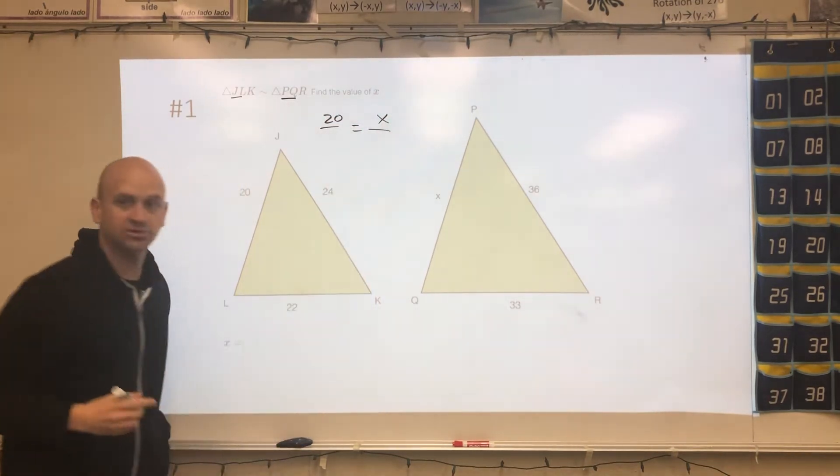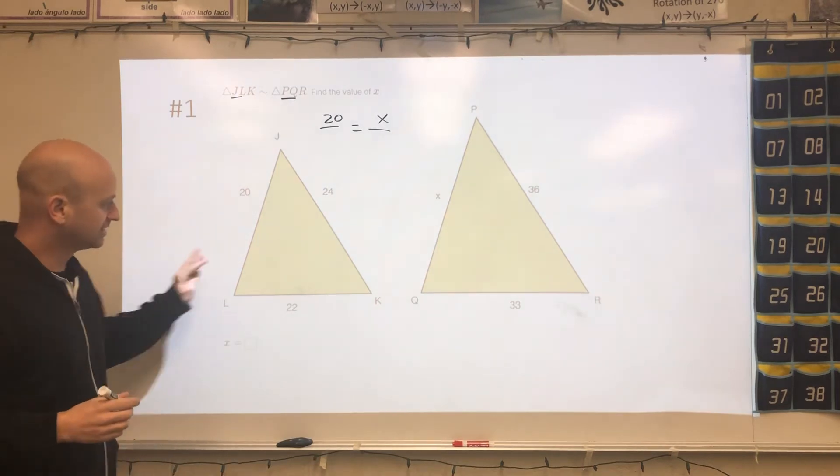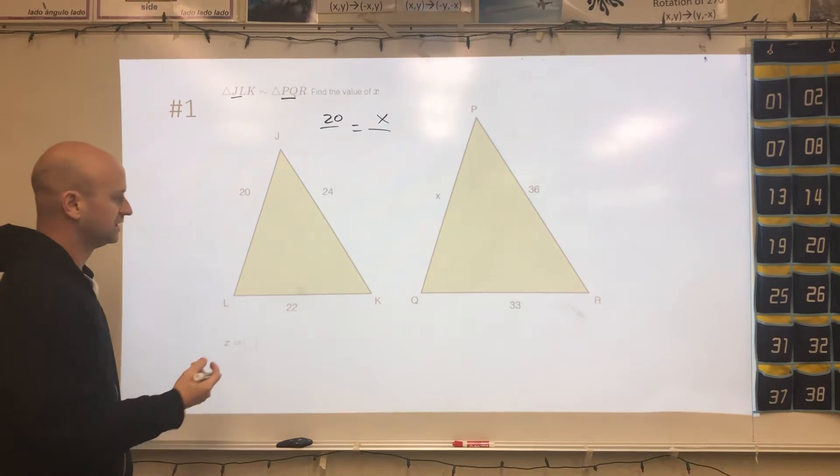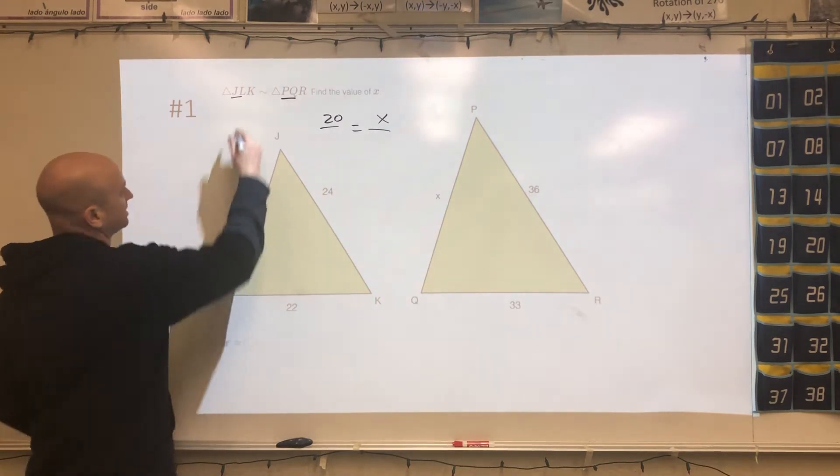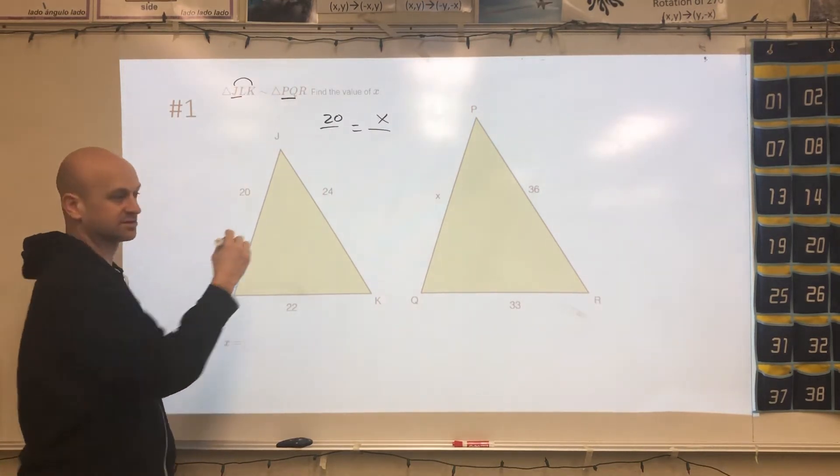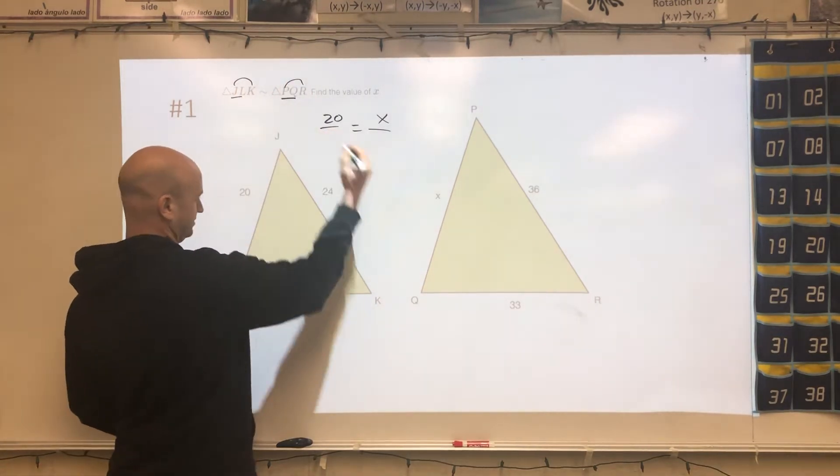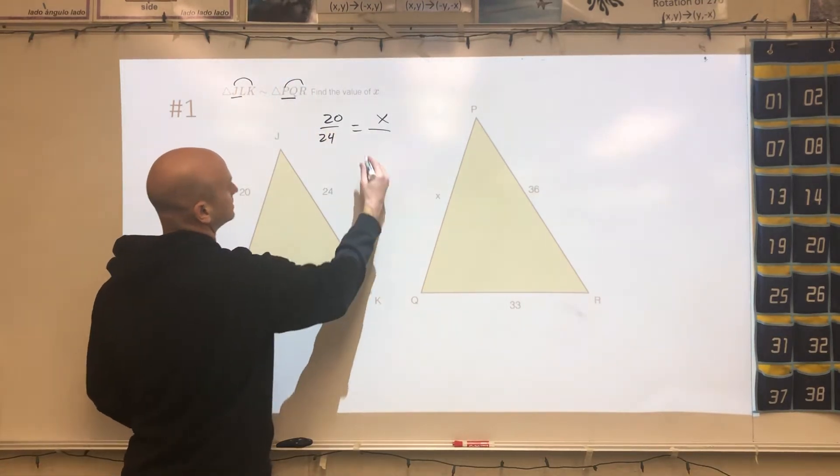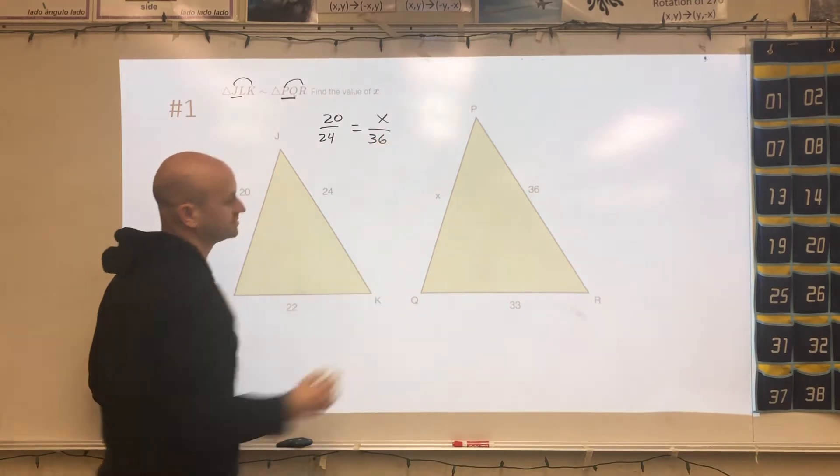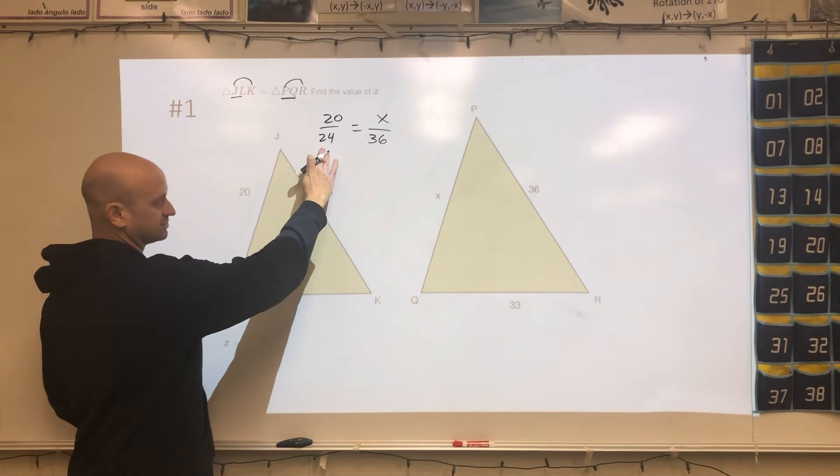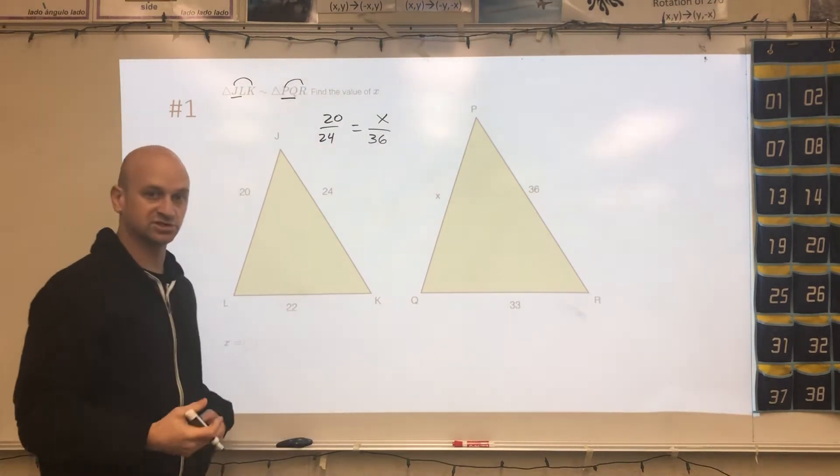So I would set up my proportion like this. 20 is going to partner up with X. Then I can partner up anything else in the problem I want. I like this: JK is the first and the third, and that's going to partner up with the first and the third in the other problem. So 24 is going to partner up with 36.